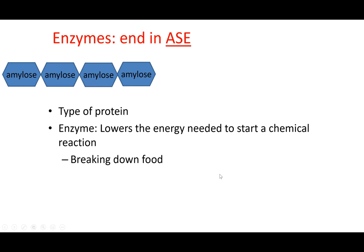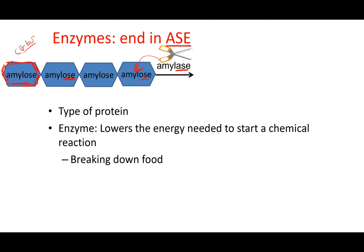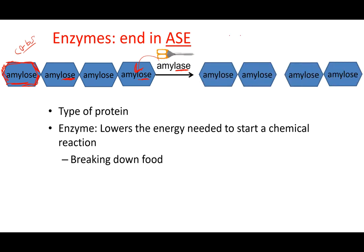Enzymes help break down food. For example, amylase is an enzyme — you know because it ends in -ASE. It breaks down amylose, which is a carbohydrate because it ends in -OSE and has the ring structure. Enzymes are named after what they break down: amylase breaks down amylose. So here's our amylose molecule, and amylase is going to split it right down the middle.